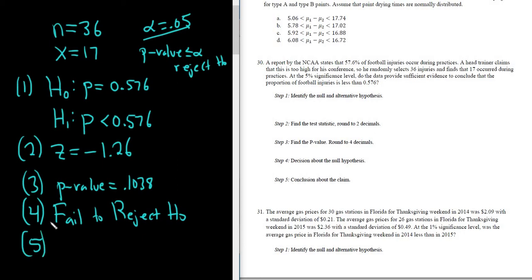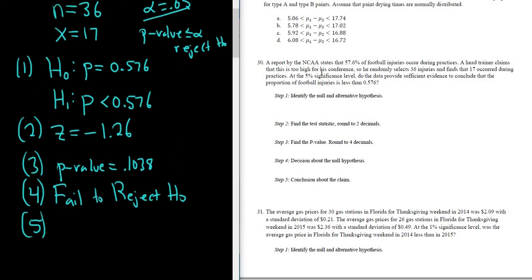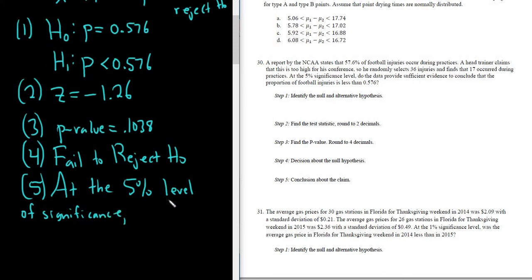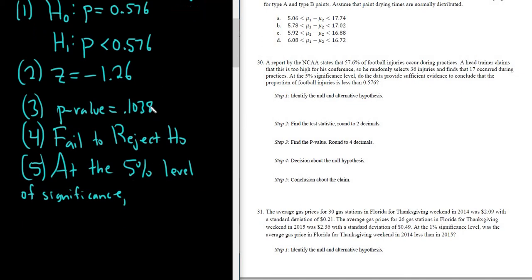Step 5. Here's where we write our written conclusion. So I like to start by identifying the significance level. So we start by saying at the 5% level of significance. So I'll always start with this. If it's like 1%, you would say 1%. If it's 10%, you would say 10%. And then we have to decide whether we reject or fail to reject. So in this case, we fail to reject. So because we fail to reject, there is not sufficient evidence.